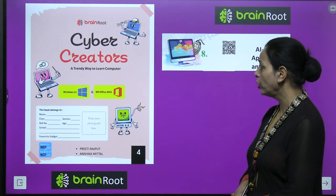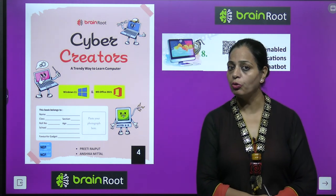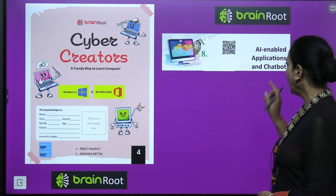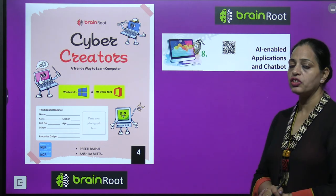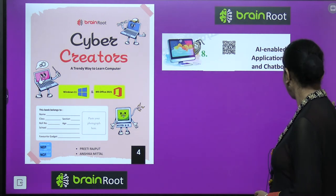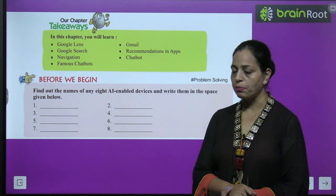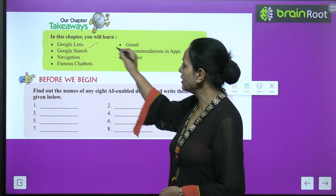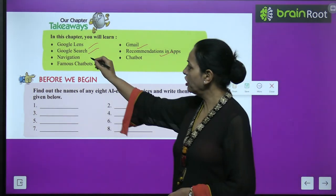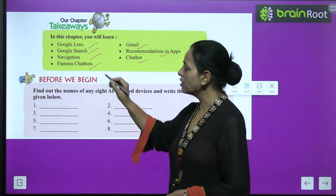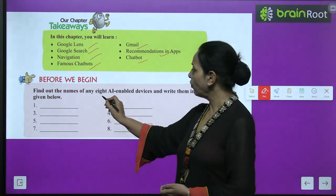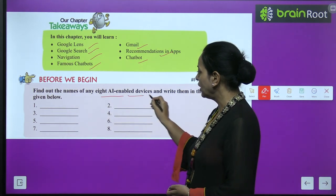Hello kids, this is your mentor Neetu. We are doing Cyber Creators Computer Book by Brain Wrote, Class 4. Today we are doing Chapter 8: AI Enabled Applications and Chatbot. AI means Artificial Intelligence. You have studied this in your previous class. In this chapter we will learn about Google Lens, Gmail, Google Search, recommendations in apps, navigation, chatbots, and famous chatbots.